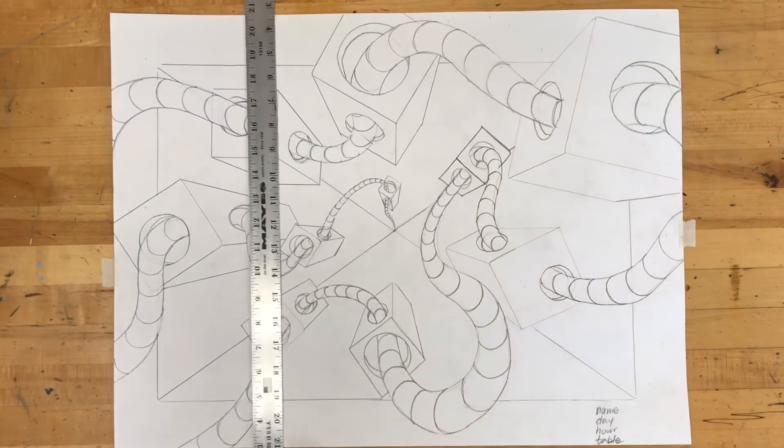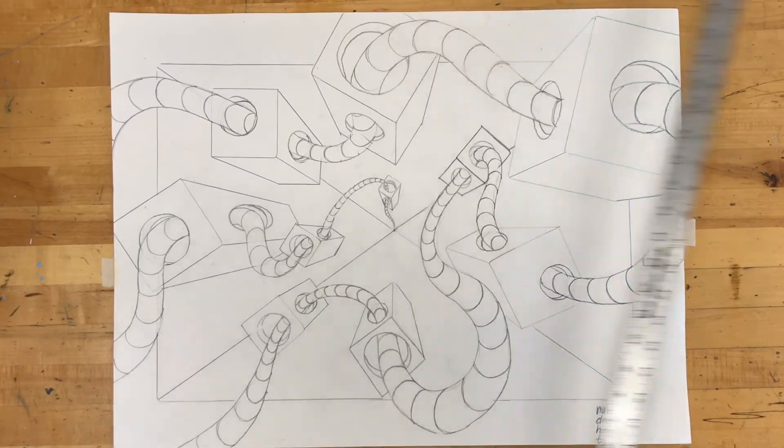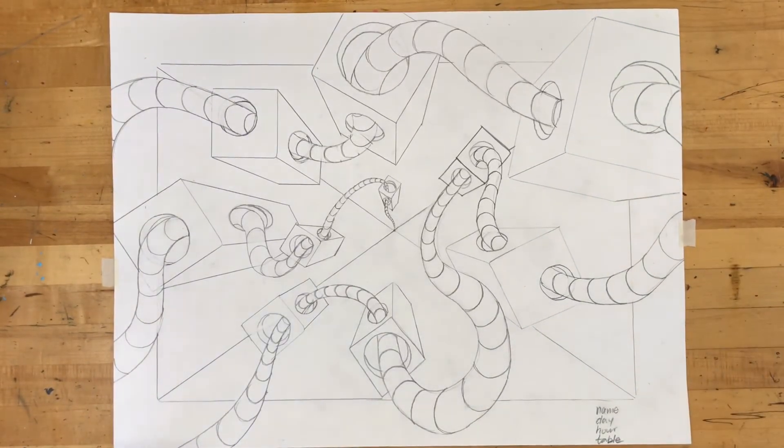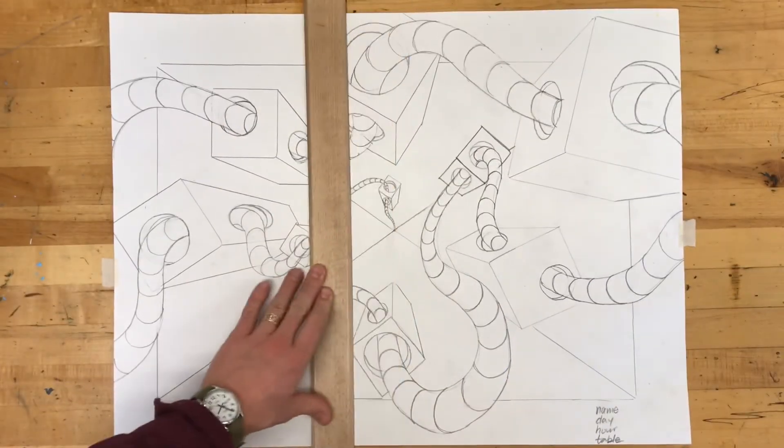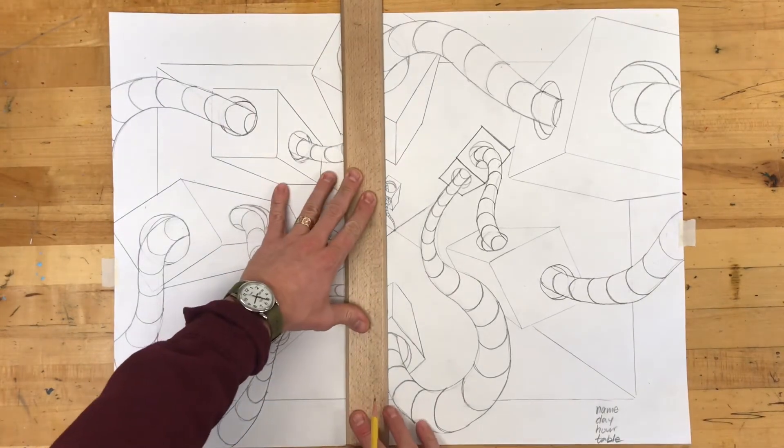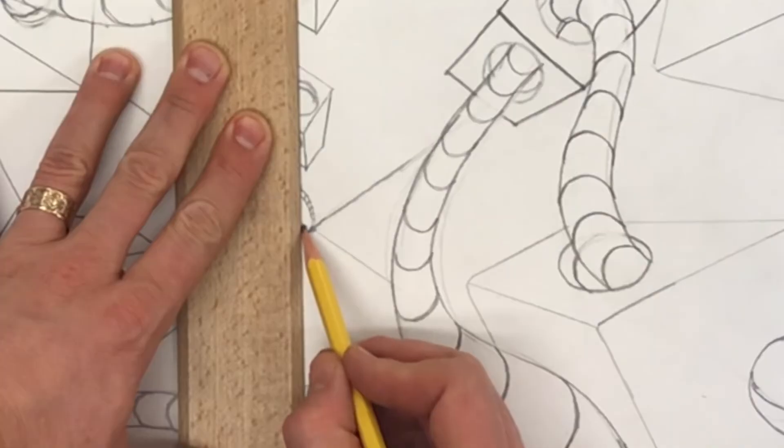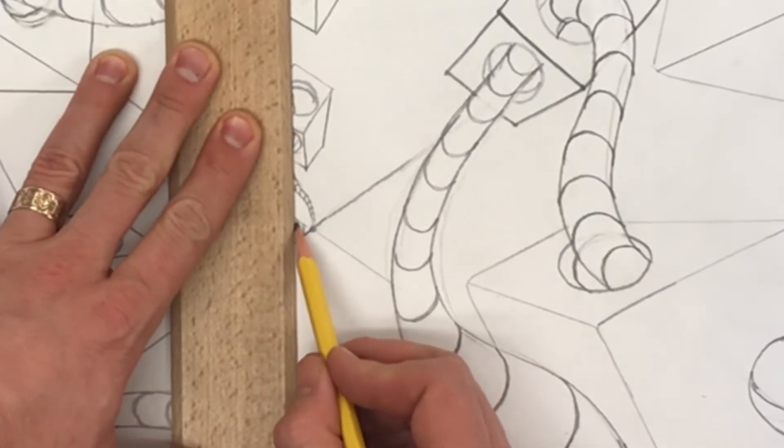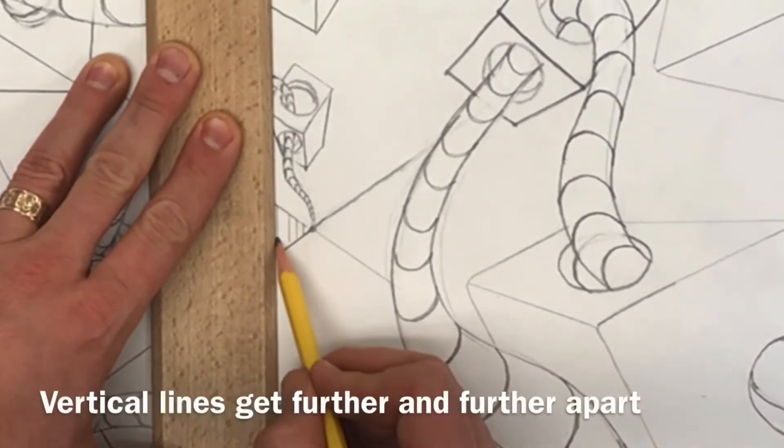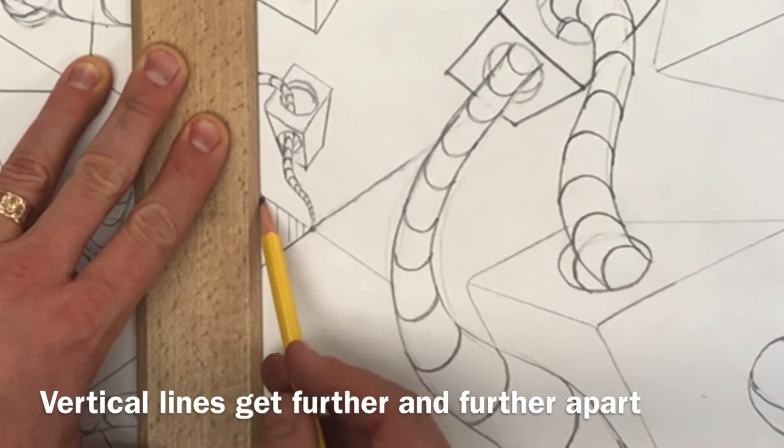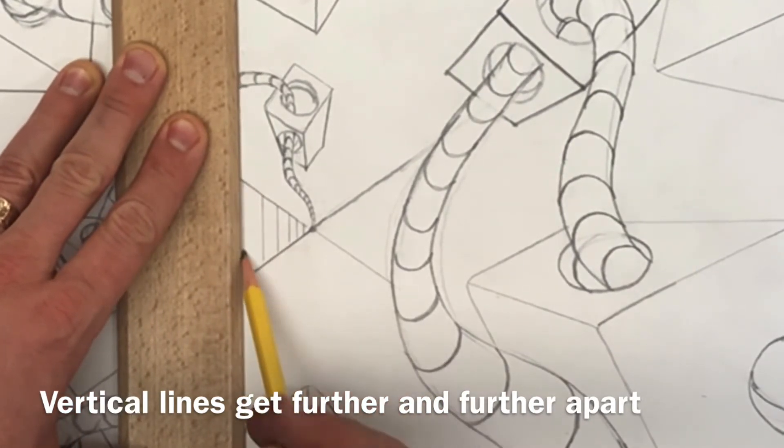You can use a ruler for this next step, but I find that the best tool to use is a T-square. It looks like this and it locks into the side of your table to create perfect vertical lines. It's helpful that your paper is taped down square with the edge of your table. Starting next to my vanishing point, I'm going to begin to make vertical lines. And these vertical lines should gradually be getting further and further apart from each other.